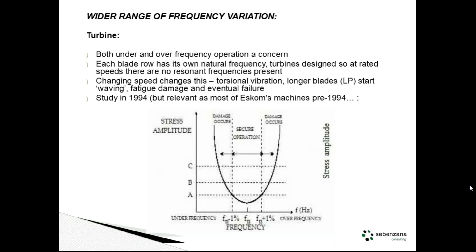The blades start flapping around and we get fatigue damage and eventual failure. If the blades go, you have a disaster on your turbine — this is not to be taken lightly. There was a study done in the 90s that affects industrial machines, most of which are pre-1994. It shows that as soon as you go more than 1% over or under frequency, you start getting into the potential to cause damage. Certainly at 2% — which is fine for the generator, which is rated for 2% — the turbine starts to become problematic. I'm not sure how much the turbine guys are involved in these grid code discussions.